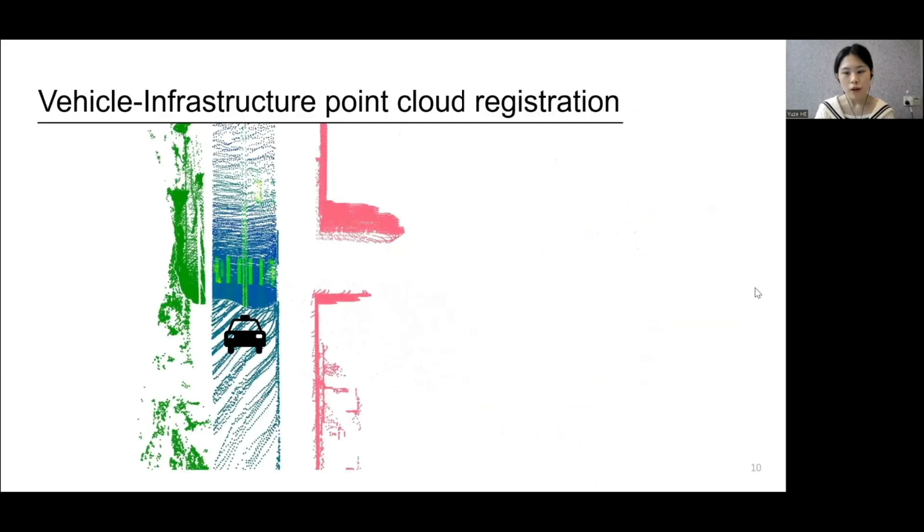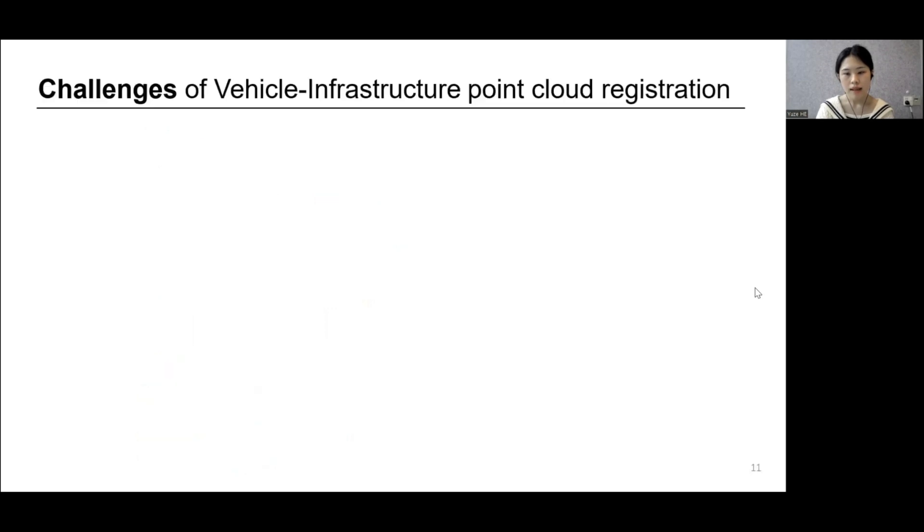Formally, vehicle infrastructure point cloud registration problem is defined as follows. Given the infrastructure point cloud and the vehicle point cloud, we need to find a transformation T that consists of a rotation matrix R and a translation vector T. This problem presents several major challenges.